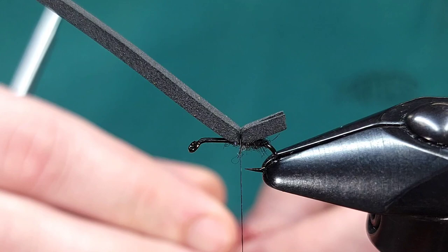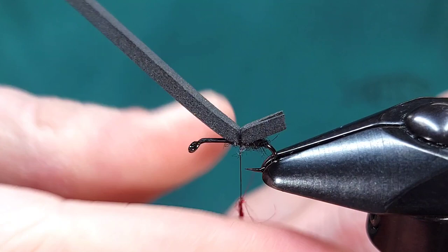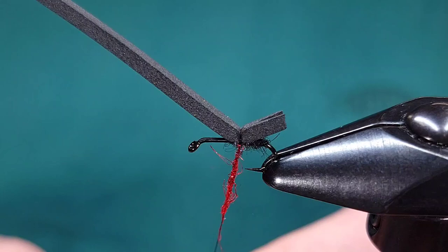For the hot spot I'm using Arizona Diamond Dub in red. You could use Ice Dub. You could use something else. You could use a different color. You could leave the hot spot out if you'd like. Again just using a tiny amount. This is probably about a half inch size.